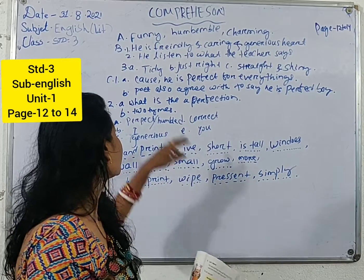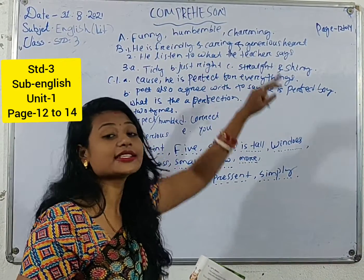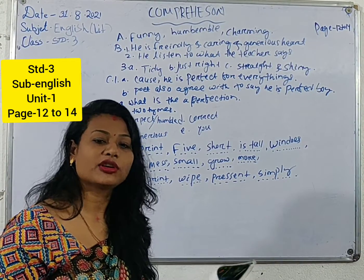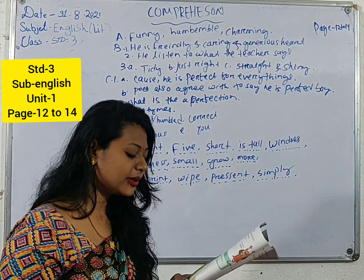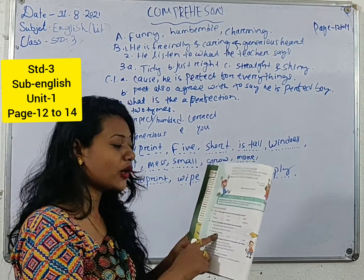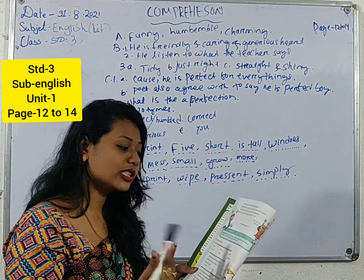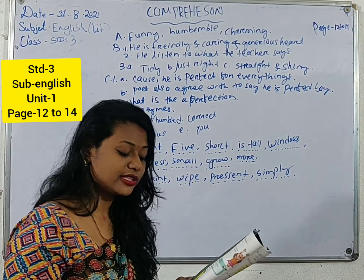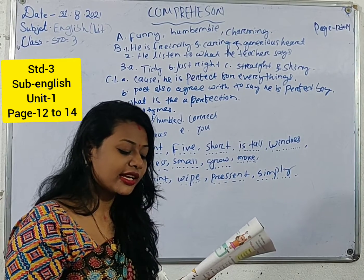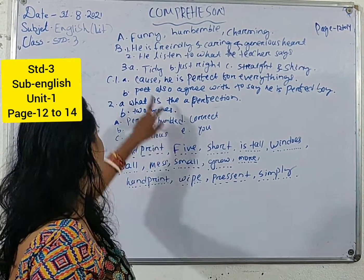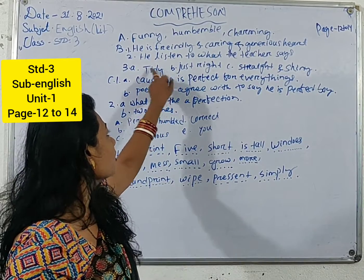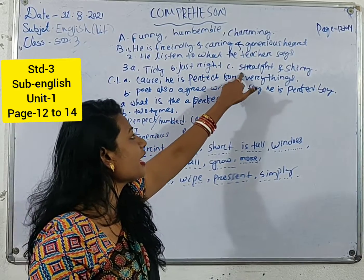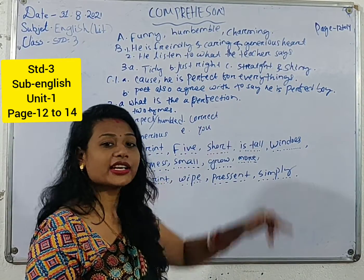The second number is: what does the poet do at school? He listens to what the teacher says. The third one is: describe the poet's appearance. His clothes are clean and tidy. His hair is just right. His teeth are straight and white.